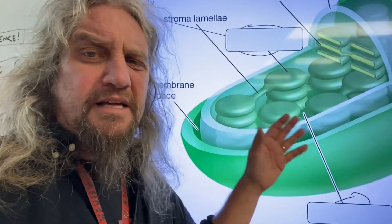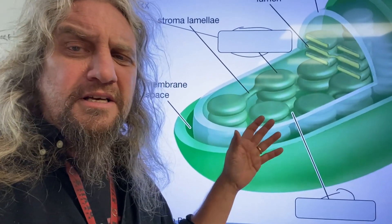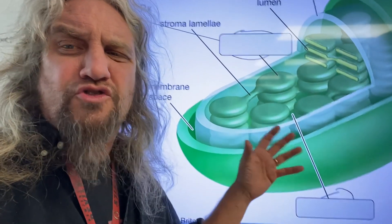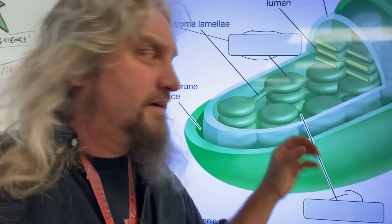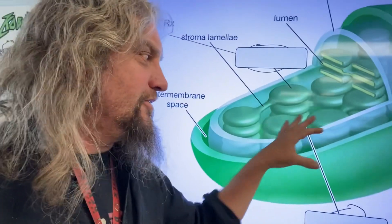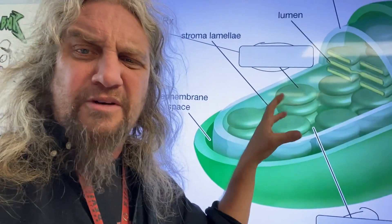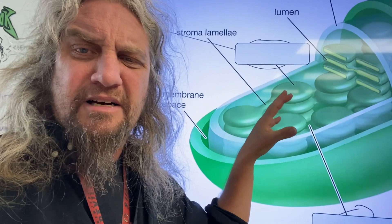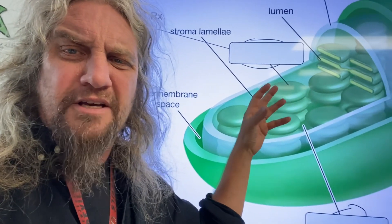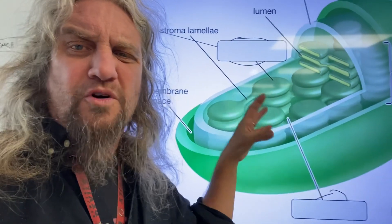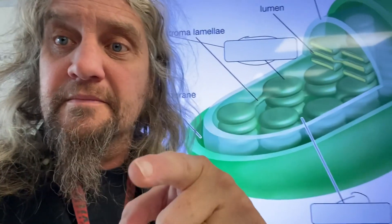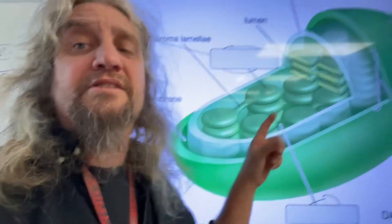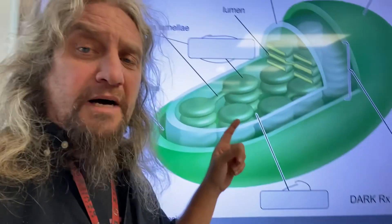In between the thylakoids is a really thick liquid called the stroma. Think of it as the cytoplasm of the chloroplast — the stroma.